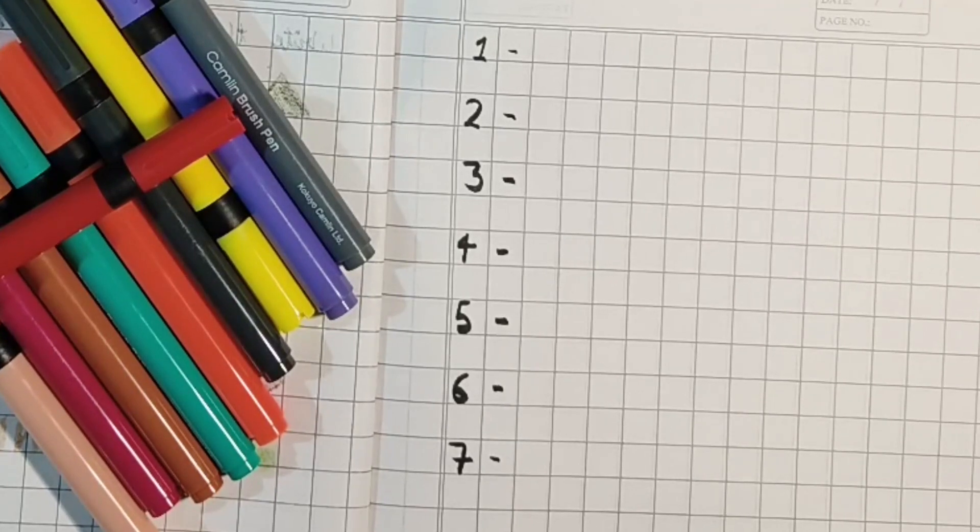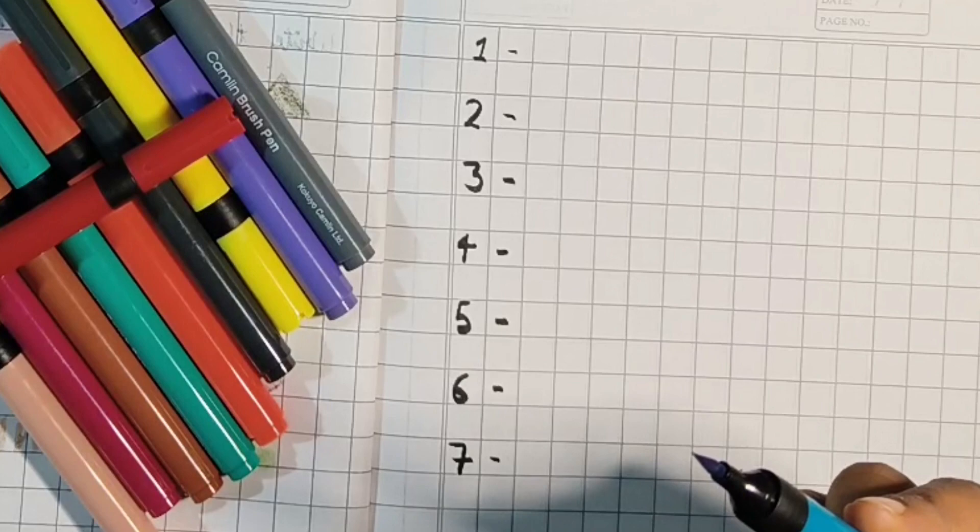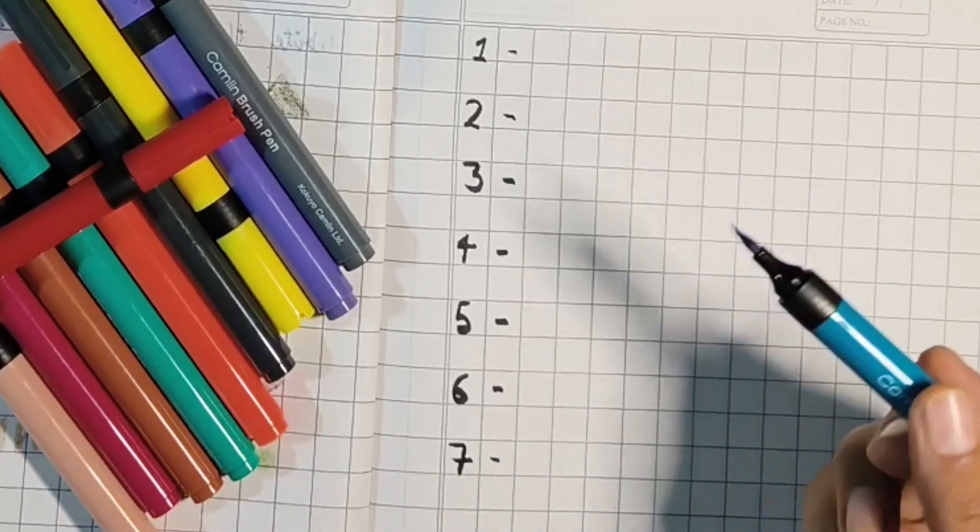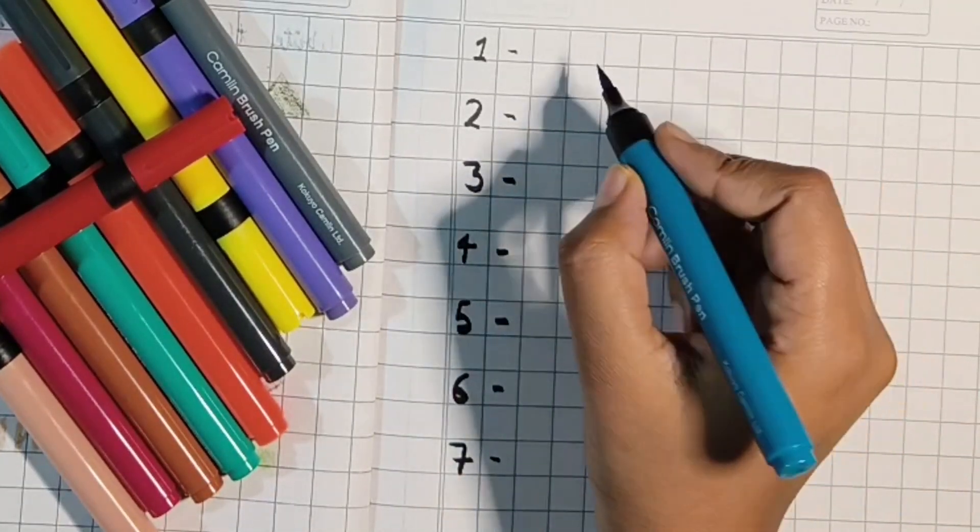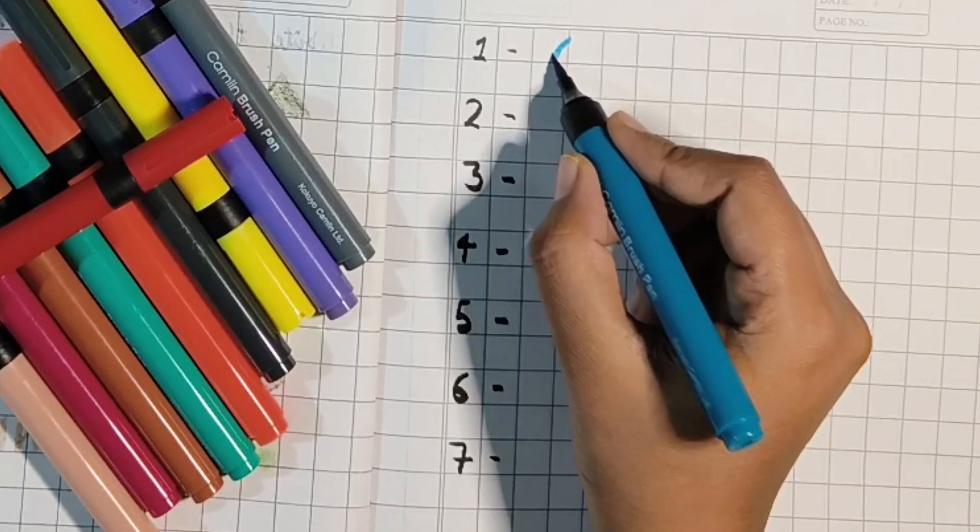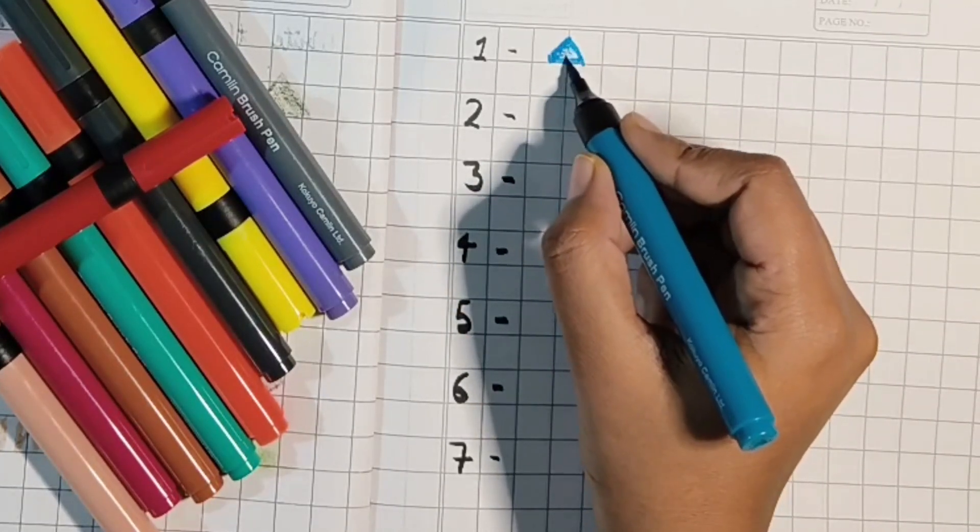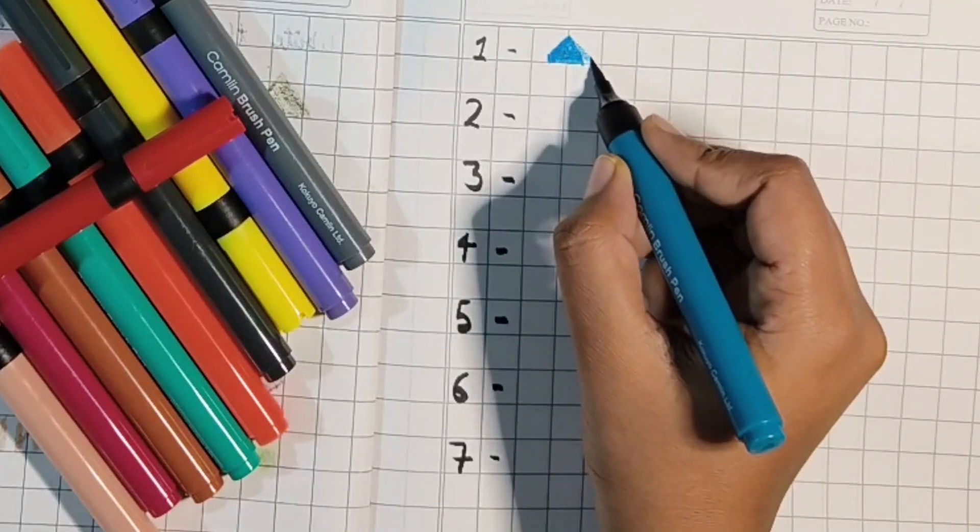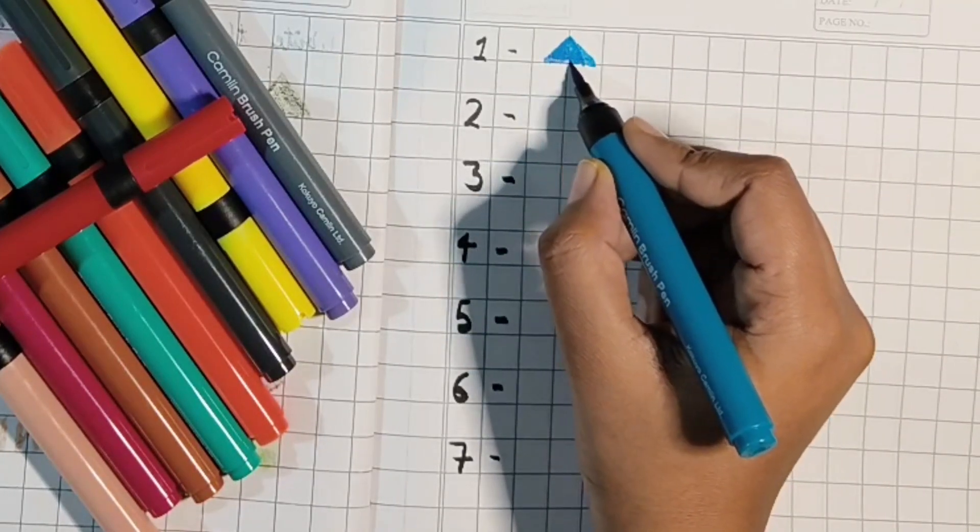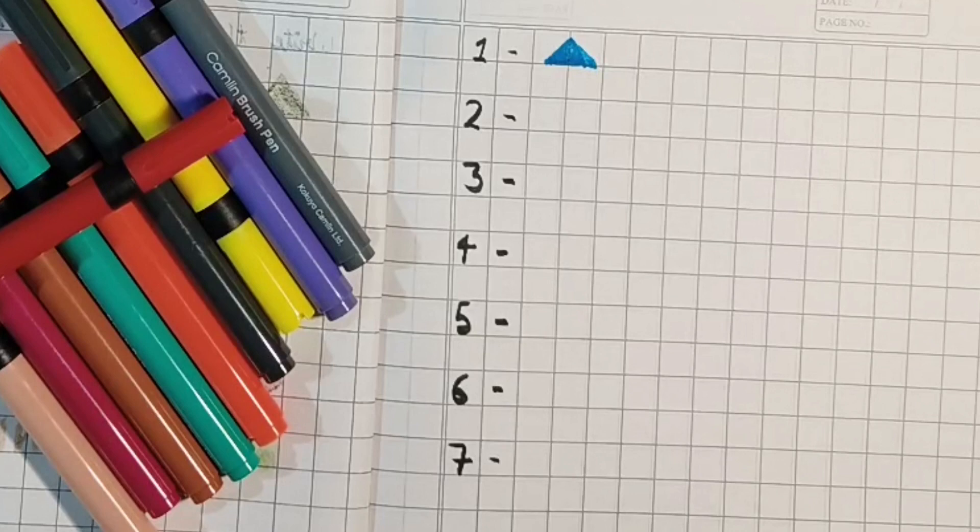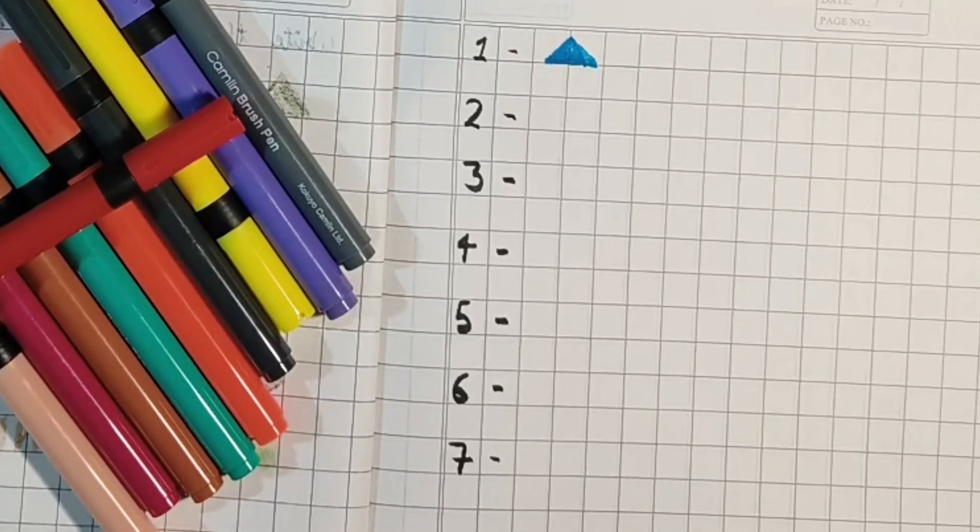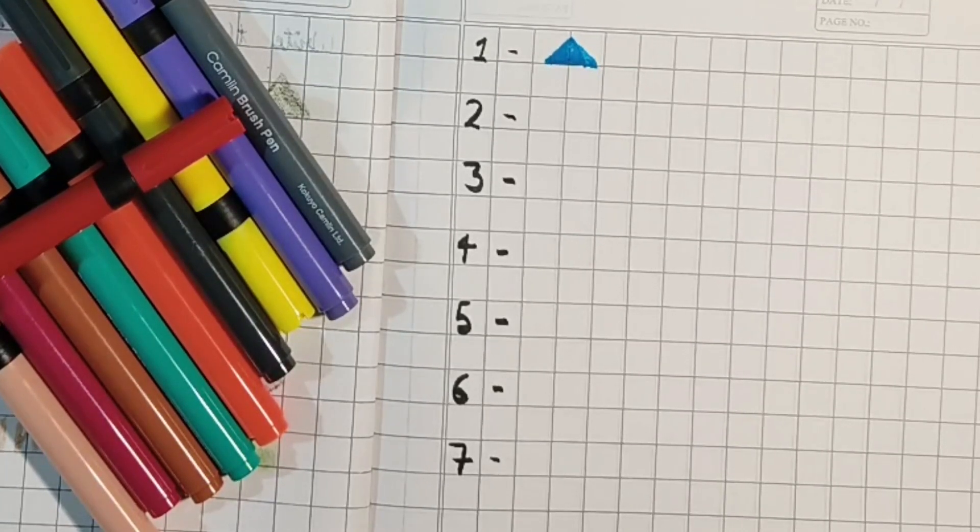So we are starting with one. In one, I'm making one triangle. In one, you have to make only one shape.